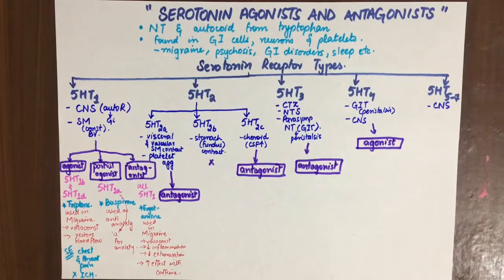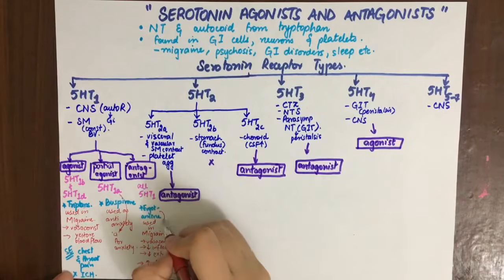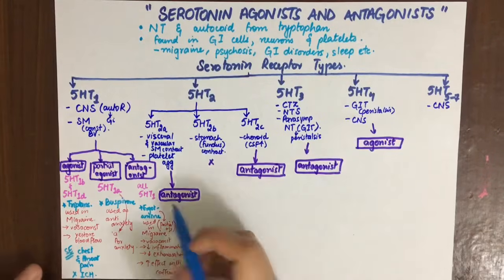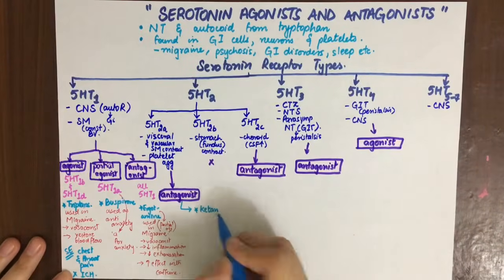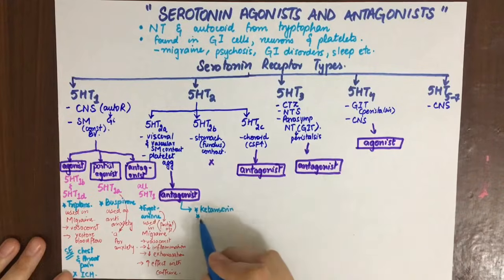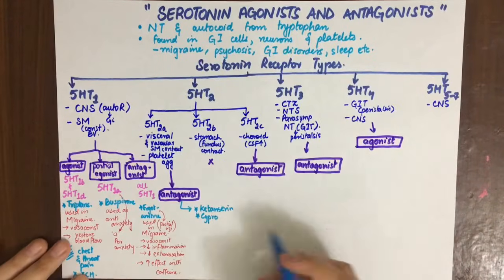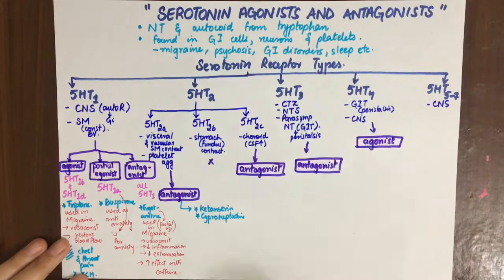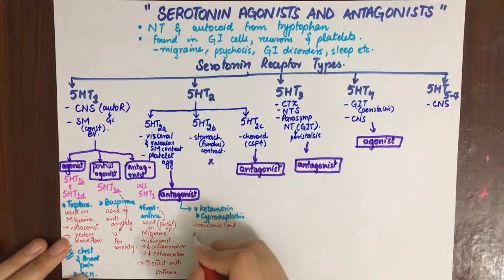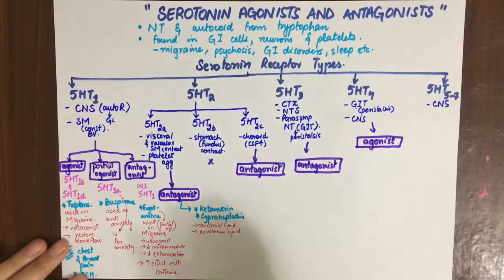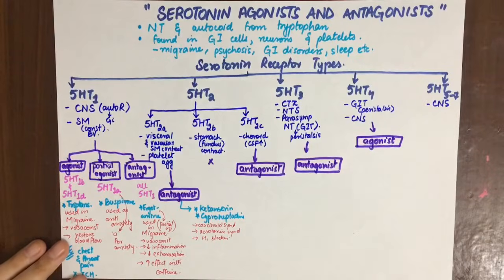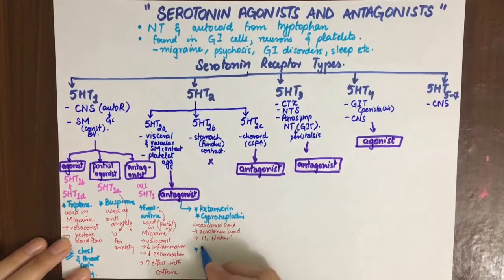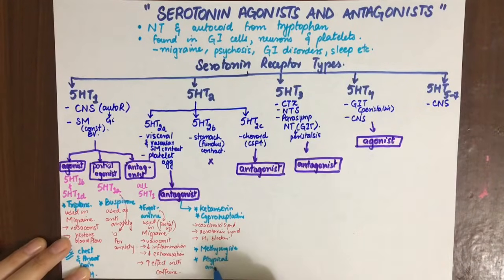The 5-HT2A antagonists include ketanserin, cyproheptadine — which is used in carcinoid syndrome, a tumor in the appendix or terminal ileum that secretes serotonin — and methysergide. Serotonin syndrome, which occurs when serotonin levels are excessively elevated due to interaction with MAO inhibitors and similar drugs, is also relevant here. Atypical antipsychotics are also 5-HT2A antagonists.